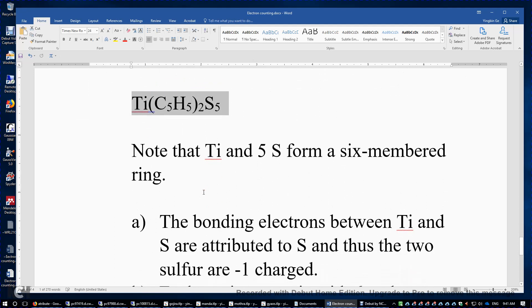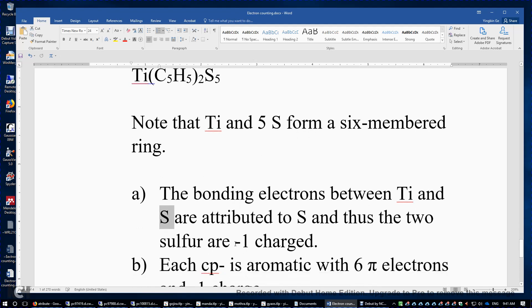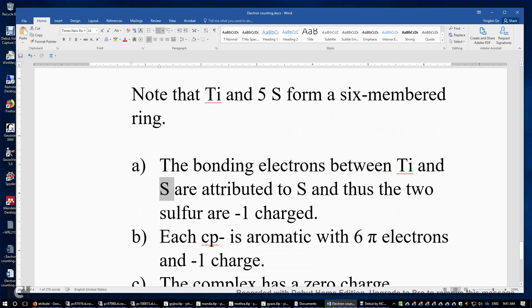And then we need to somehow allocate the bonding sigma bonding electrons to the ligands. Therefore, the 2 sulfide atoms that are bonded to titanium actually each has a negative 1 charge. And also, each cyclopentadienyl anion is aromatic with 6 pi electrons and negative 1 charge.